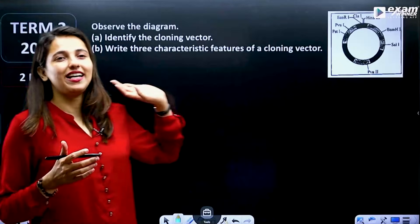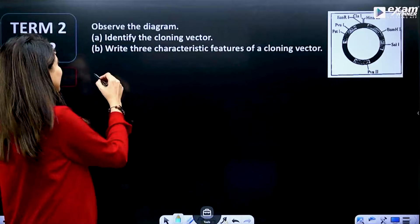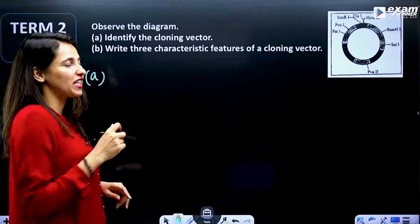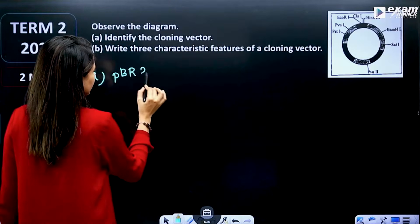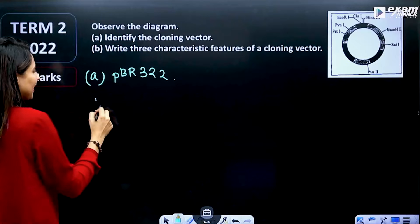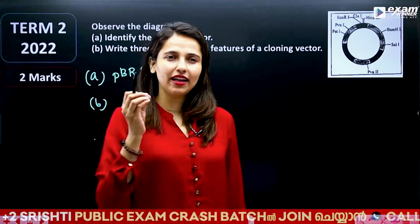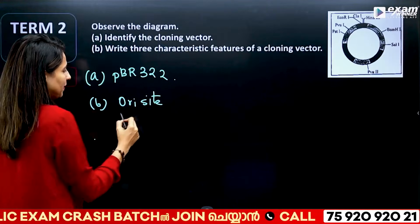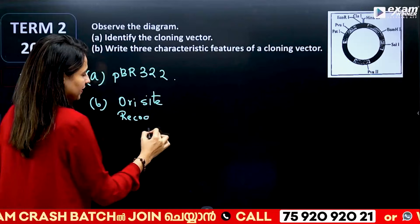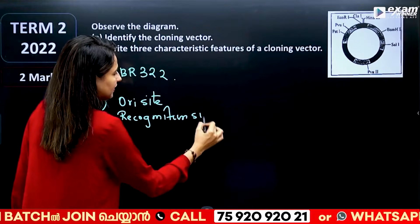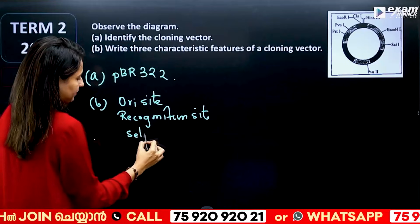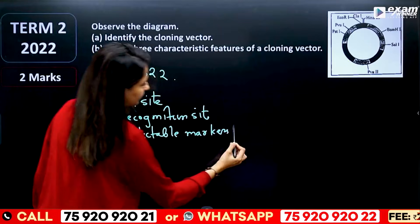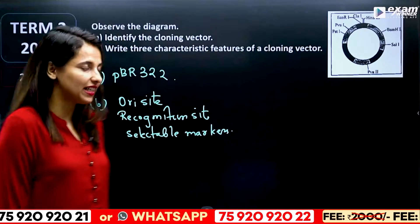One important question is the cloning vector. What is the first artificial cloning vector? That is PBR322. There are three characteristic features of a cloning vector: origin of replication, recognition site, cloning site, and selectable markers.